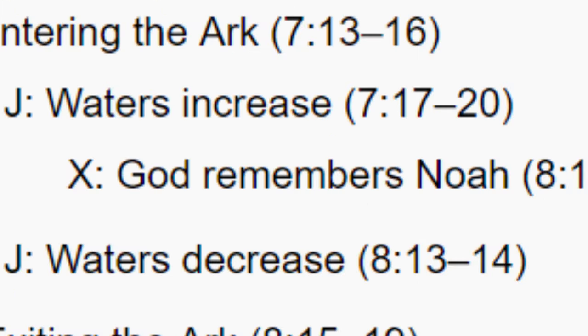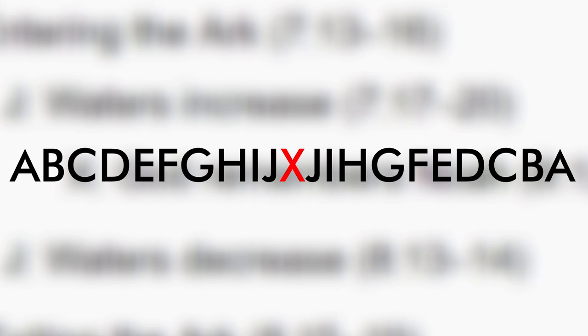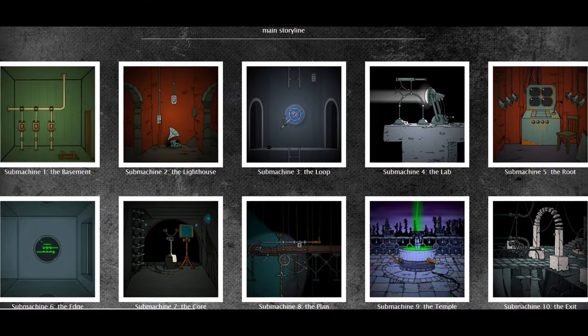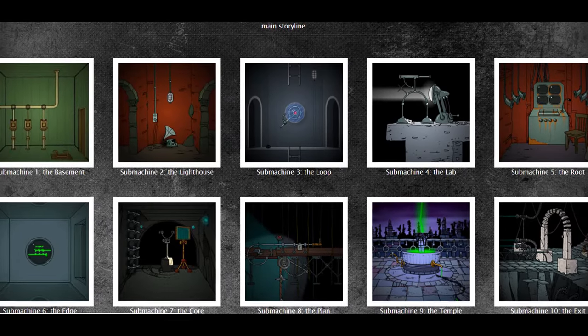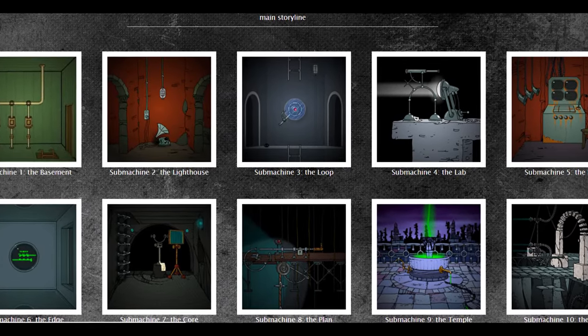So the story of Noah would have a chiastic structure of A, B, C, D, E, F, G, H, I, J, X, J, I, H, G, F, E, D, C, B, A. Thankfully, the chiastic structure found in Submachine isn't nearly as complex, as there are only ten main games to compare to each other.